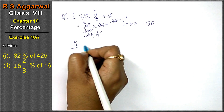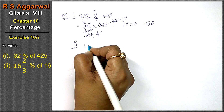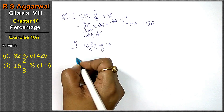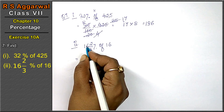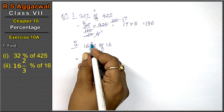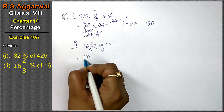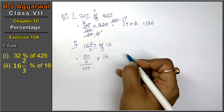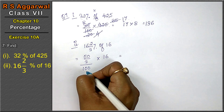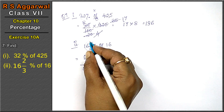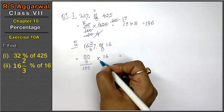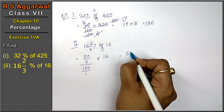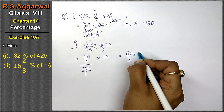Let's do the second part. Second part is 16 whole 2 upon 3 percent of 16. Now, 16 whole 2 upon 3: 3 into 16 is 48, 48 plus 2 is 50. So we get 50 upon 3 upon 100 into 16. We changed the percentage to upon 100, and this equation solved gives 50 upon 3. Off means multiplication, 16 as it is — upon 1. So we can write it as 50 upon 3 into 1 upon 100.